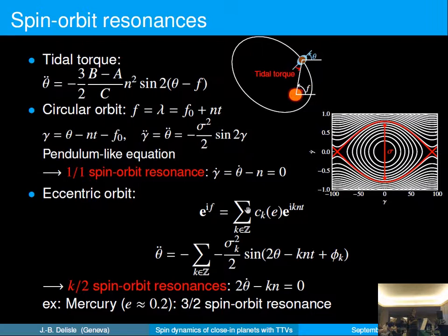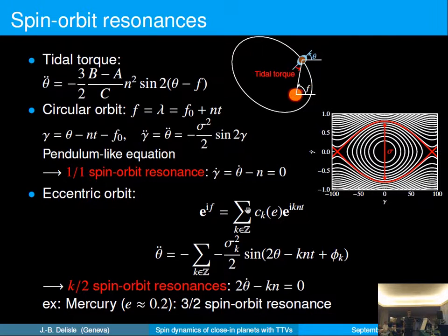In the phase space, you have a fixed point corresponding to the exact resonance, then the libration area, and the separatrix of the resonance in red. Outside of the separatrix, the spin evolution is non-resonant. This is for the circular orbit case.